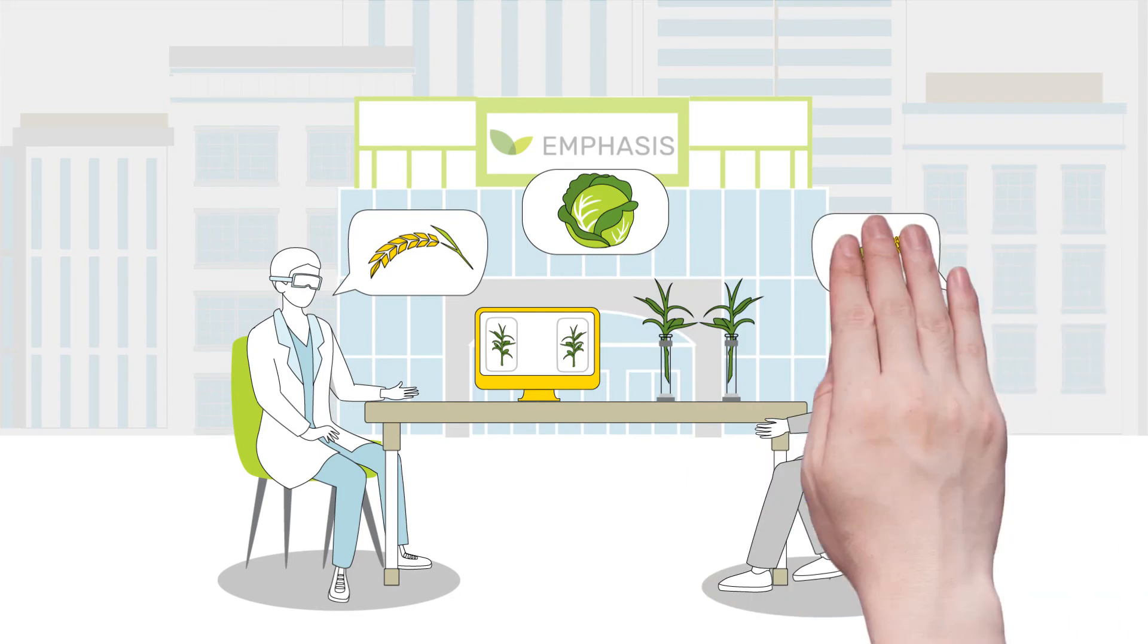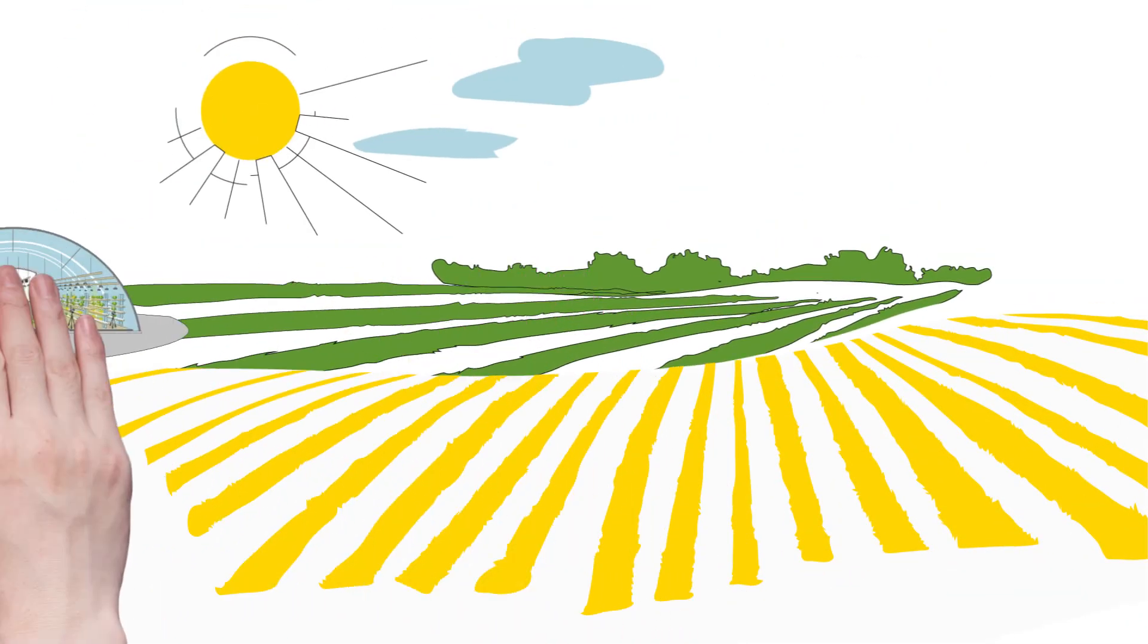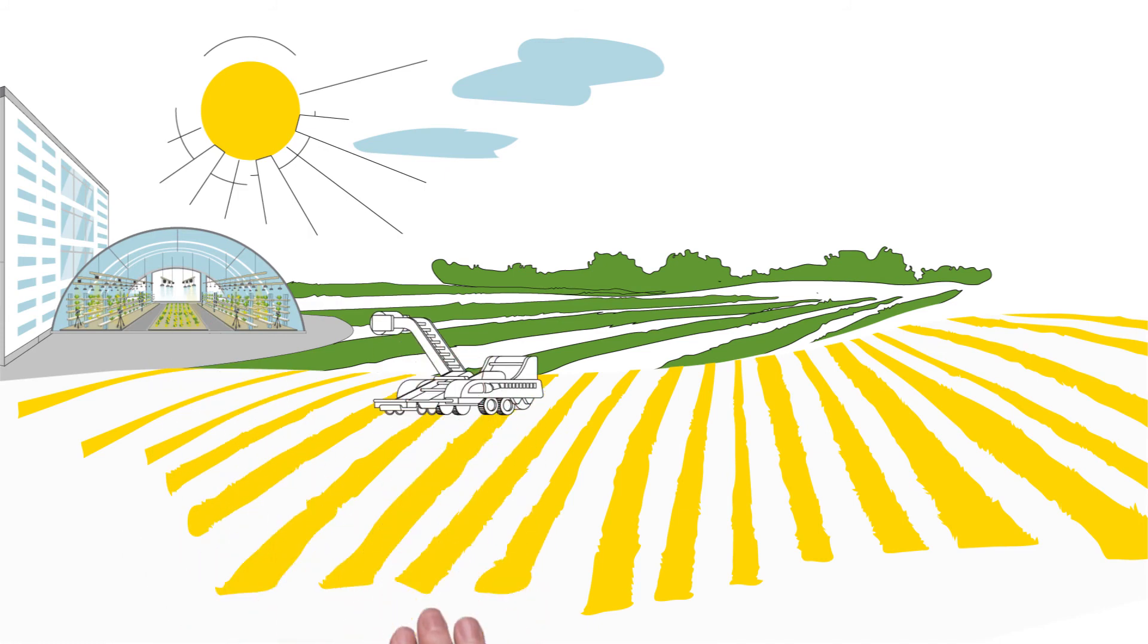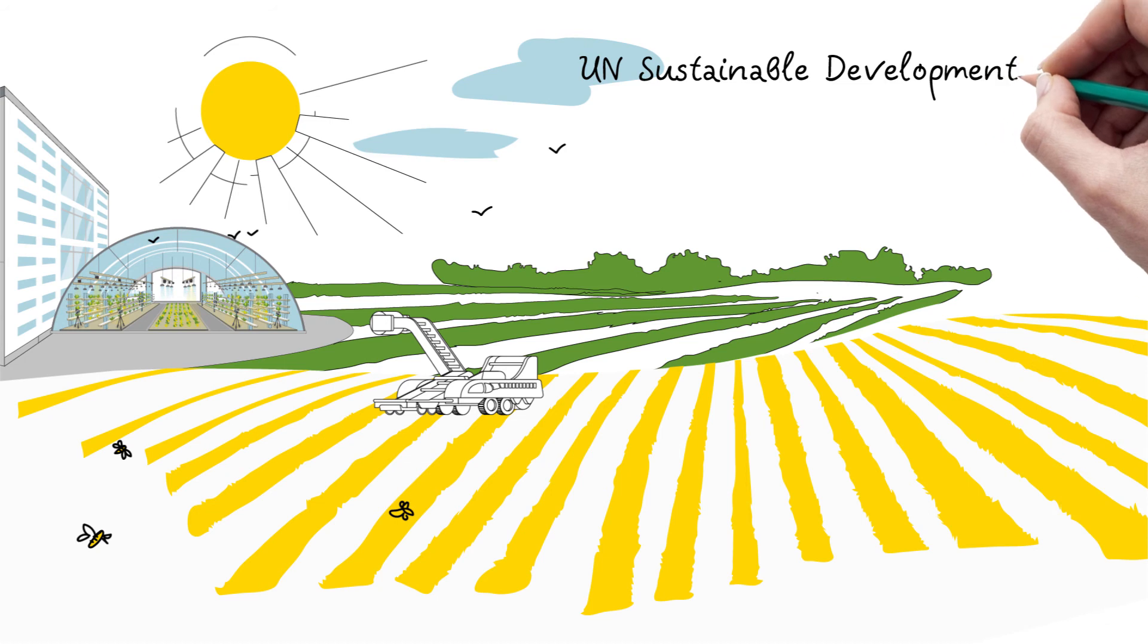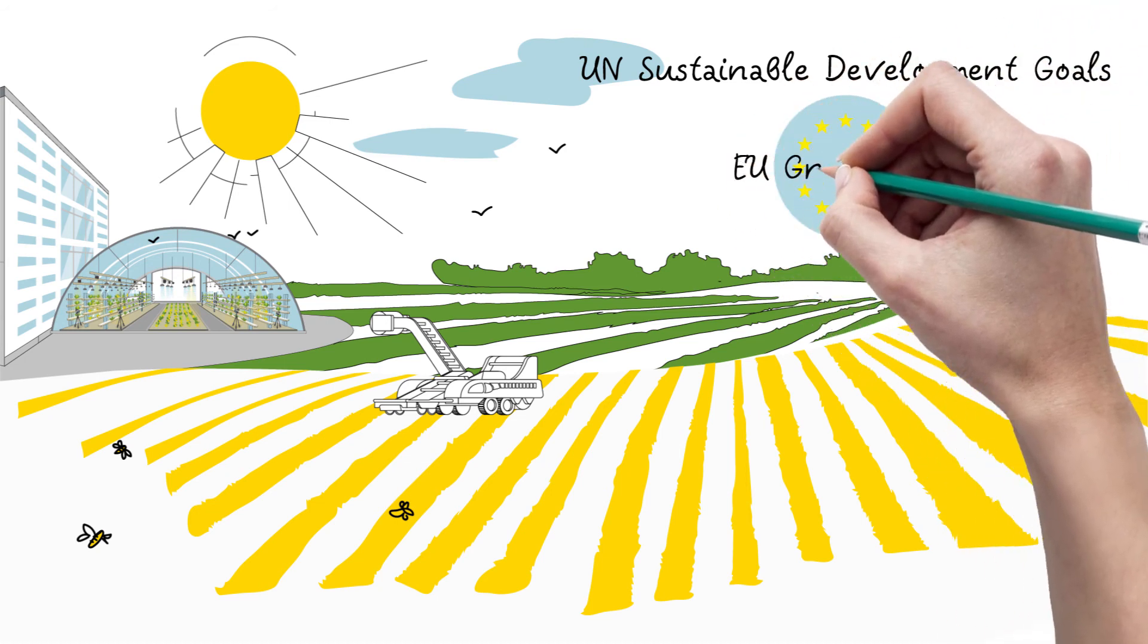This will also boost agricultural business in Europe. By addressing the core of sustainable agriculture, EMPHASIS will contribute to international strategies, such as the UN Sustainable Development Goals and the European Green Deal.